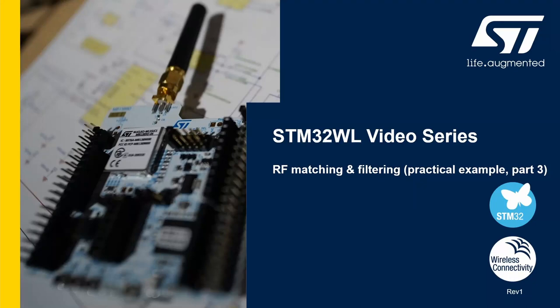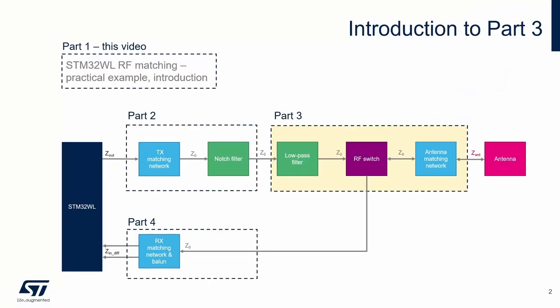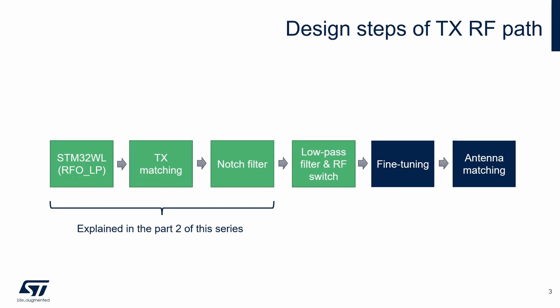Hello. This video is the third part of a series on practical RF impedance matching and filtering of the STM32WL. In this part we focus on the low-pass filter, RF switch, and the antenna matching network. The first three blocks of transmitter design steps were discussed in part 2. In this part we continue with the remaining blocks.